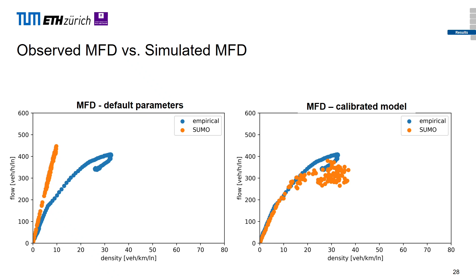Now some preliminary results. Here are the MFDs: the blue curve shows the empirical MFD averaged over several days for Zurich, and the other is from SUMO. The left plot shows the mesoscopic model with default parameters — basically no congestion. The right plot shows results at iteration 351; SUMO crashed at that iteration for unknown reasons so we couldn't fully converge, but we still have quite acceptable results, only slightly underestimating capacity.